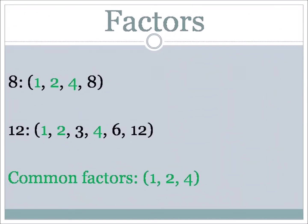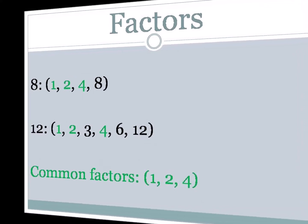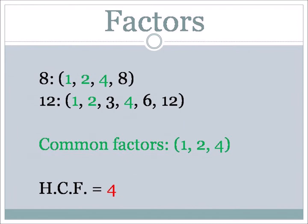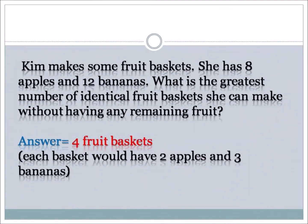So we have 8 with factors 1, 2, 4, and 8, and 12 with factors 1, 2, 3, 4, 6, and 12. The numbers highlighted in green — 1, 2, and 4 — are the common factors of 8 and 12. Now pick the highest: the highest common factor is 4. That's the highest number that can divide into both 8 and 12 without a remainder. Going back to the word problem: she can make 4 fruit baskets, each with 2 apples and 3 bananas.